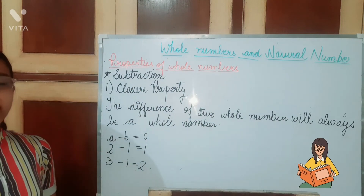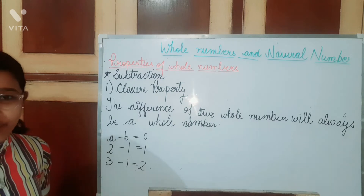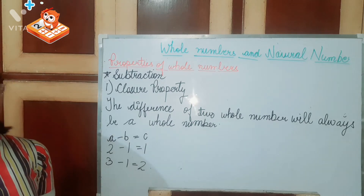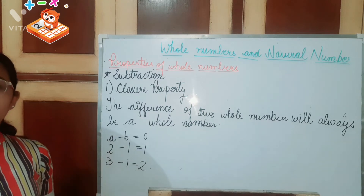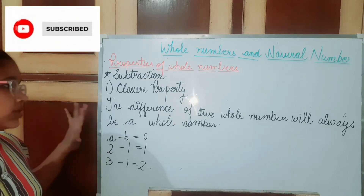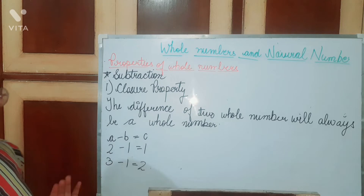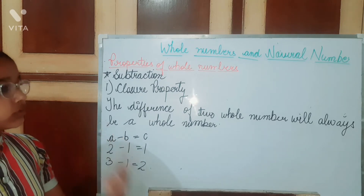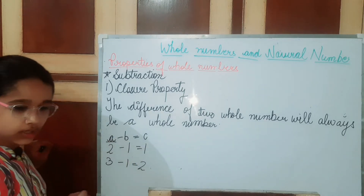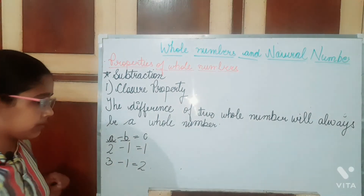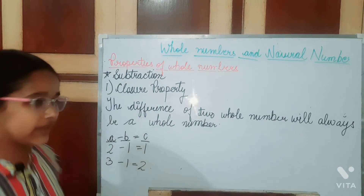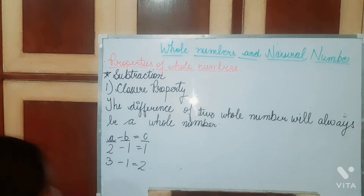In addition, we studied that if someone has two whole numbers, their sum will be a whole number. For example, 1 plus 2 — one and two are whole numbers, so their sum is three, and three is also a whole number. Now for closure property in subtraction, we will see that the difference of two whole numbers will always be a whole number. So if A and B are whole numbers, their difference C will also be a whole number.